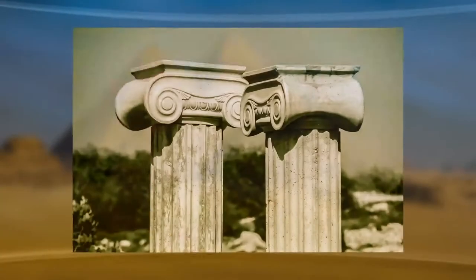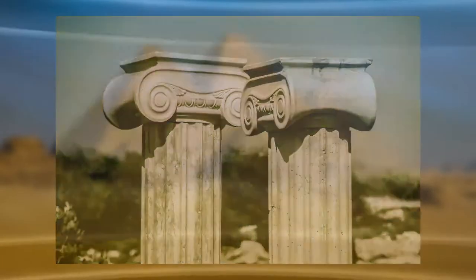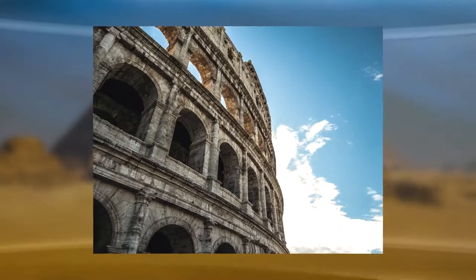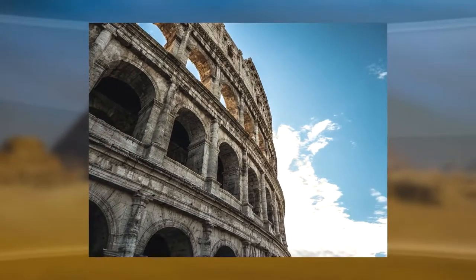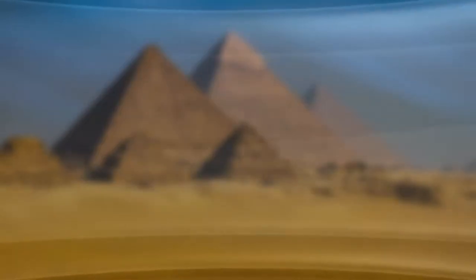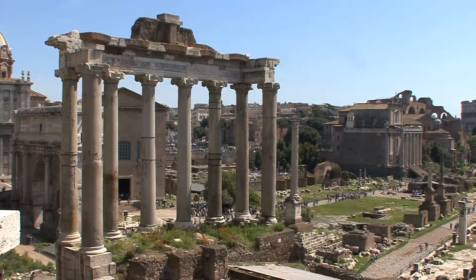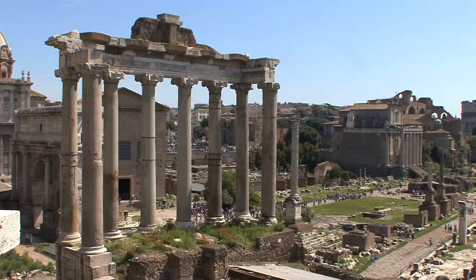Classical antiquity is normally used to denote the history in the olden days from the starting of recorded Greek history in 776 BC. This date also overlaps the actual founding of Rome in 753 BC, the beginning of the archaic period in Greece, and the history of the Romans. The concluding date of the period is disputed by historians. Some say the period ended with the fall of the Western Roman Empire in 476 AD, which is also the most accepted date.